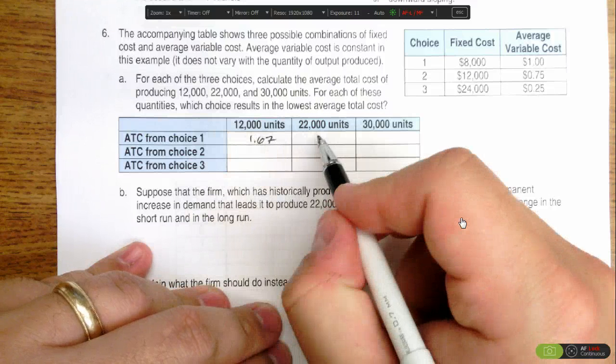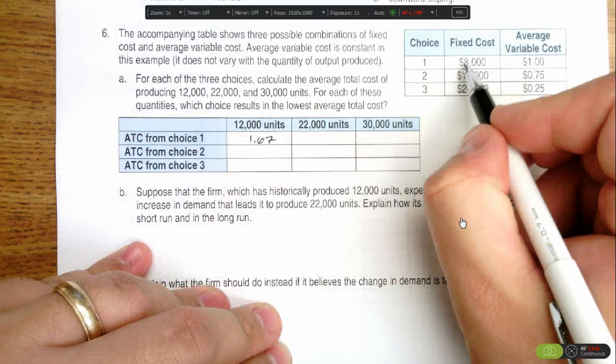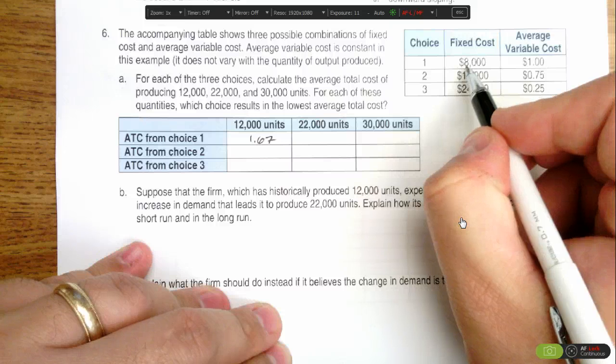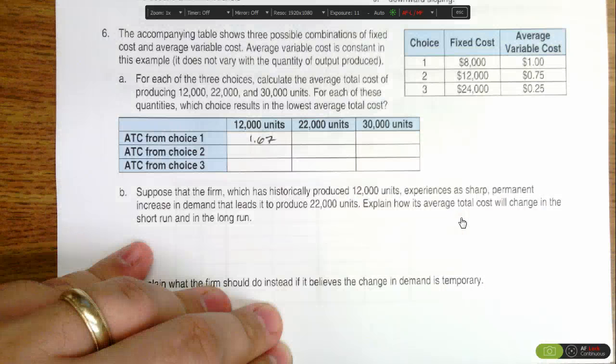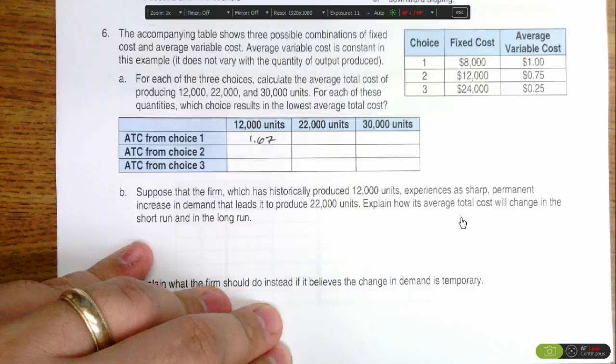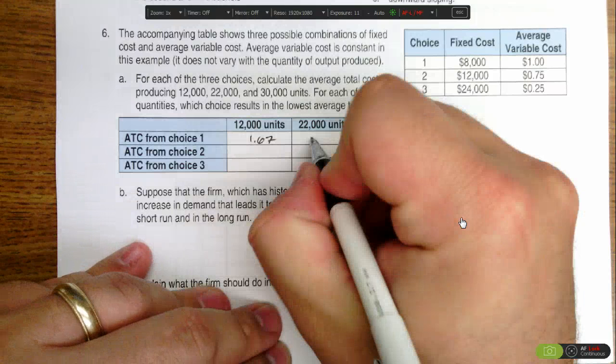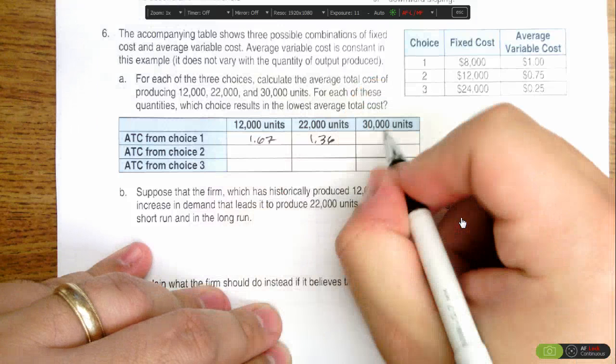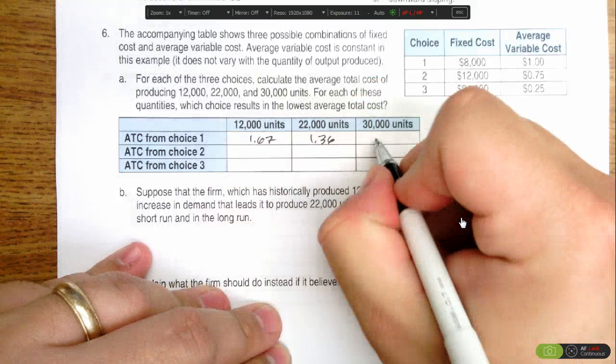If I'm making 22,000 units, it's $8,000 in fixed costs plus $22,000 in variable costs—that's $30,000 total. Divided by the 22,000 units we plan to produce gives us an average cost of $1.36. And if I did it for 30,000 units, I'd get $1.27.